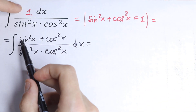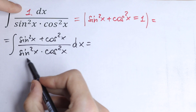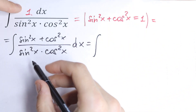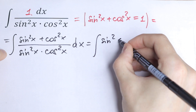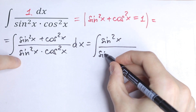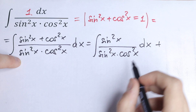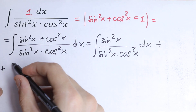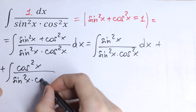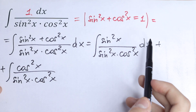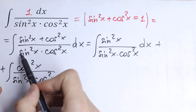Take a look — we can divide sine squared x by the common denominator, and cosine squared x by the common denominator as well. So we can write this as the sum of two integrals: sine squared x over sine squared x times cosine squared x, plus cosine squared x over sine squared x times cosine squared x, dx.